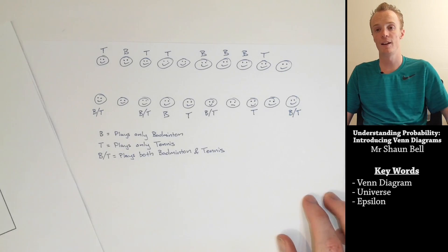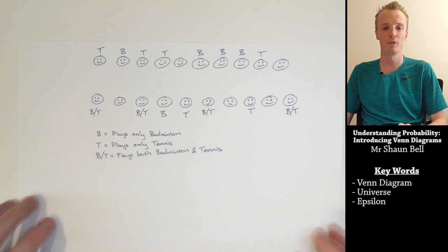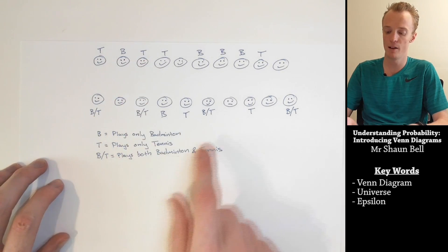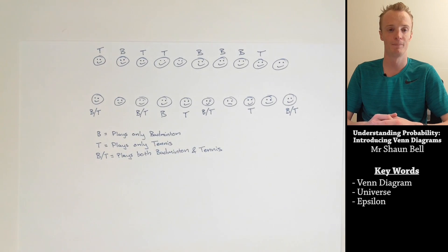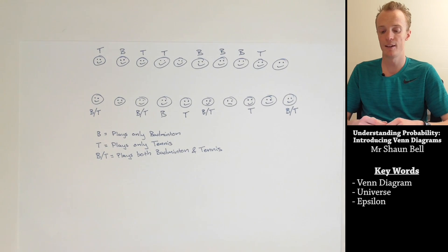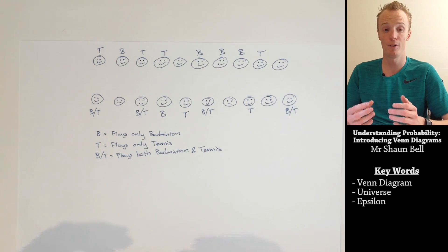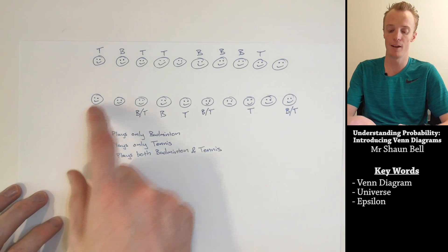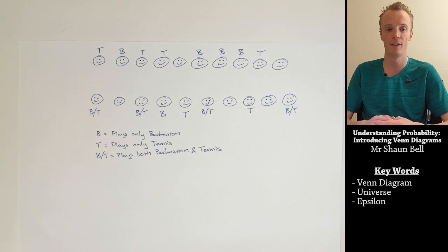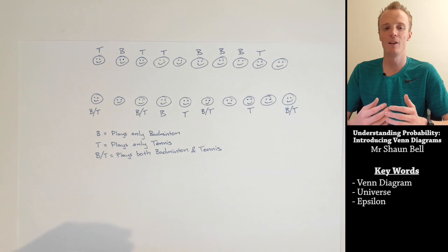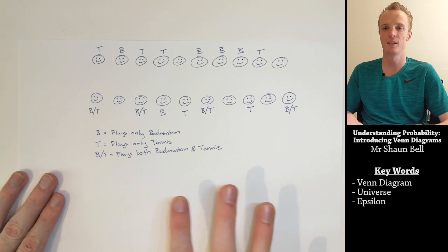To finish, here is a practice problem for you to try yourself. Here is a group of 20 people surveyed about whether they played badminton or tennis. A T indicates tennis, a B indicates badminton, a B/T indicates both, and no label means they don't play either. Try to create your own Venn diagram that represents this data.